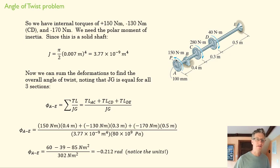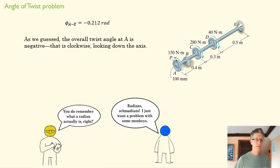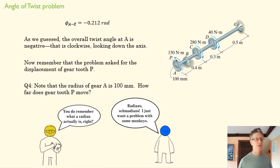We're trying to find how far P travels. Now we know the angle of twist, and that angle of twist is clockwise as we look down the axis. We've got one last question: how far does gear P move? We know the radius of the gear and the angle of twist. If you remember what a radian is...